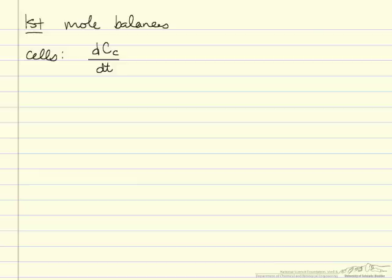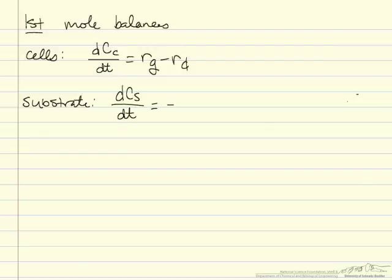First, we're going to write mole balances for the concentration of cells and substrate. For our cells, the change in concentration over time in a batch reactor is equal to the rate of growth minus the rate of death. For our substrate, the change in concentration per time equals the negative rate of growth of our cells.